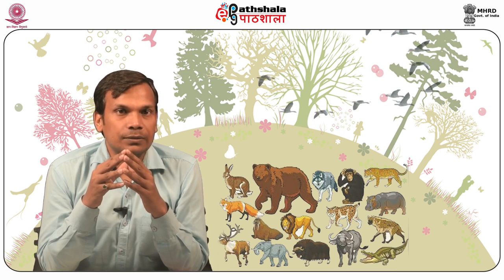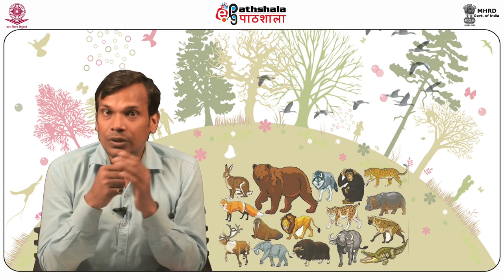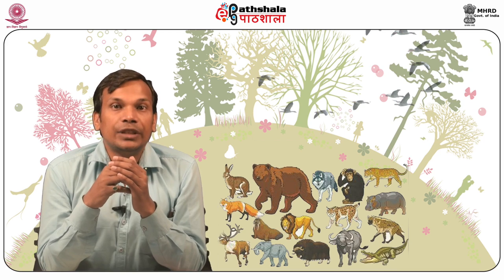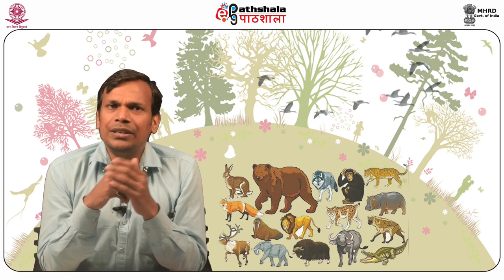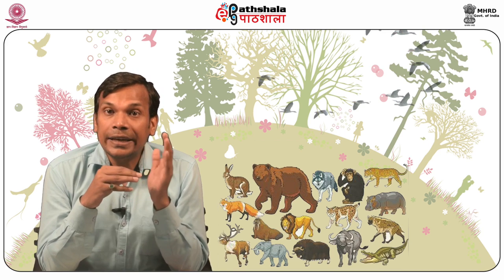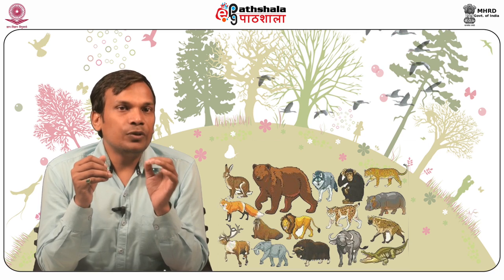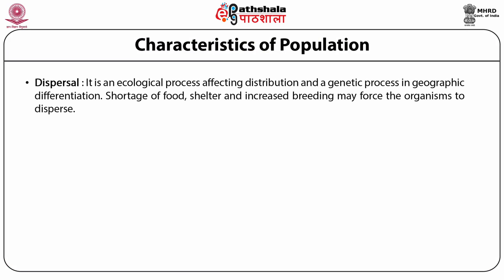The population shows group characteristics which cannot be applied to a single individual. The basic characteristics of a population include density, natality, mortality, immigration, and emigration. In addition to these attributes, there are secondary characteristics of a population which include age distribution, pattern of distribution of individuals in space — which includes dispersion and dispersal — an ecological process affecting distribution and a genetic process in geographic differentiation.